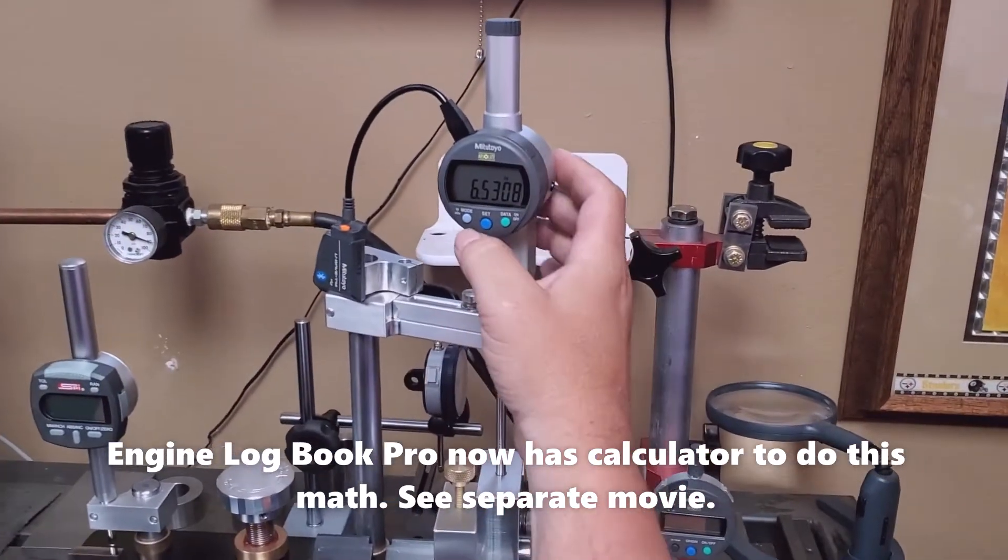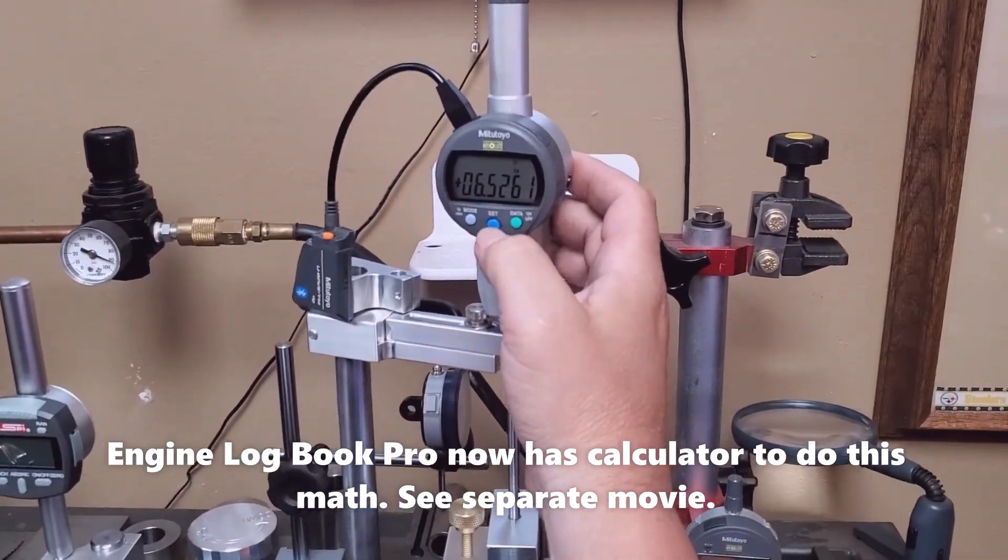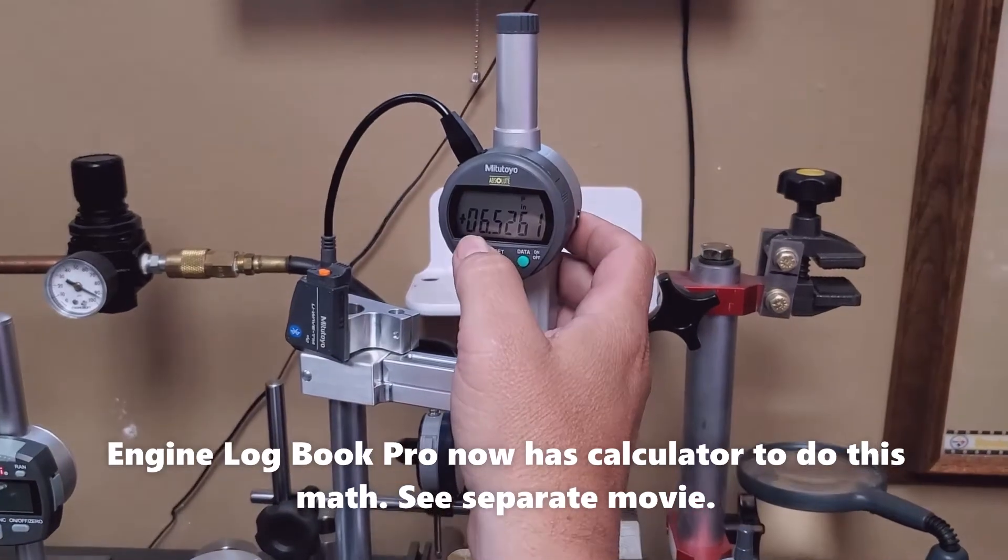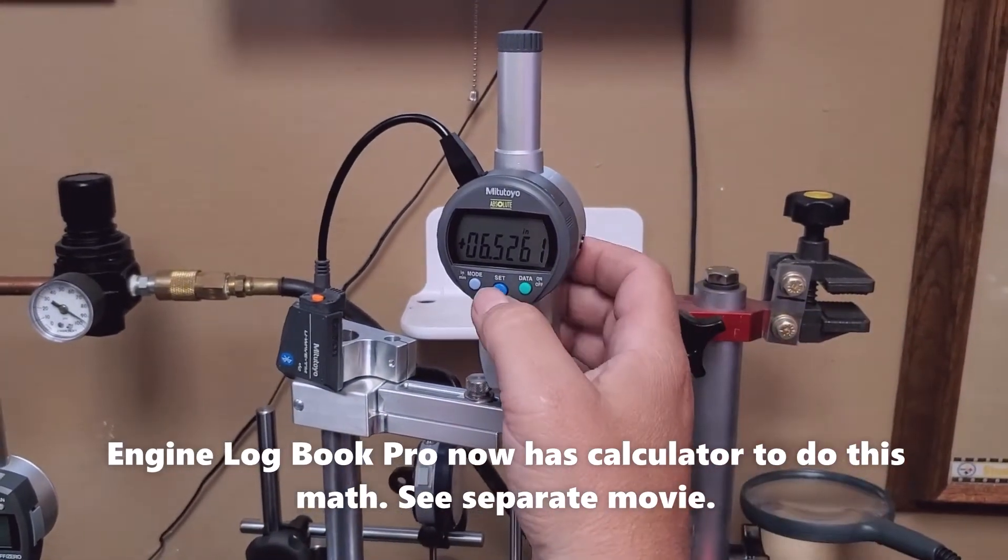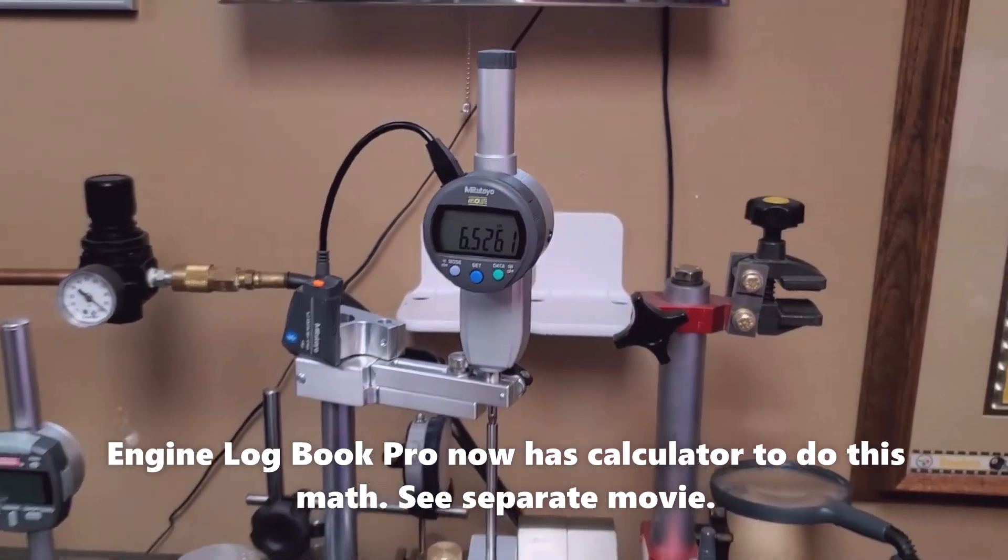Okay, simple deal with the Mitutoyo gauge. Set. I already put the preset in at 6.5261, so that's zero.